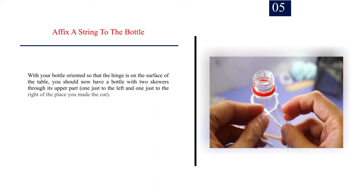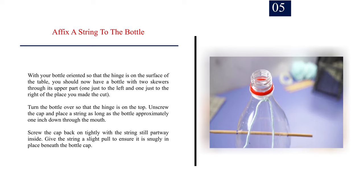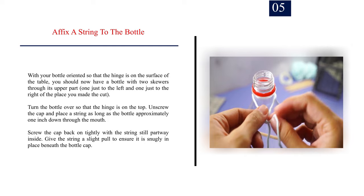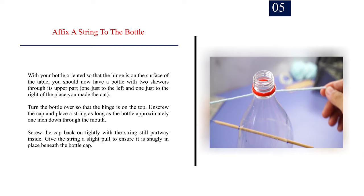Number 5: Affix a string to the bottle. With your bottle oriented so that the hinge is on the surface of the table, you should now have a bottle with two skewers through its upper part, one just to the left and one just to the right of the place you made the cut. Turn the bottle over so that the hinge is on the top. Unscrew the cap and place a string as long as the bottle approximately one inch down through the mouth. Screw the cap back on tightly with the string still partway inside. Give the string a slight pull to ensure it is snugly in place beneath the bottle cap.